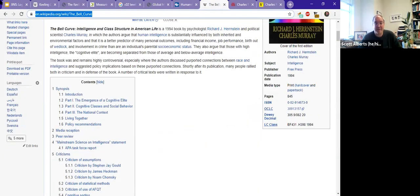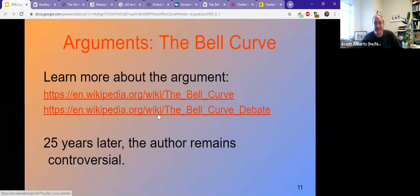There are two Wikipedia pages that I want you to look at that kind of walk through that article. I have the one here. And then there's another whole page on the controversy about the Bell Curve. And again, this book came out 25 years ago.